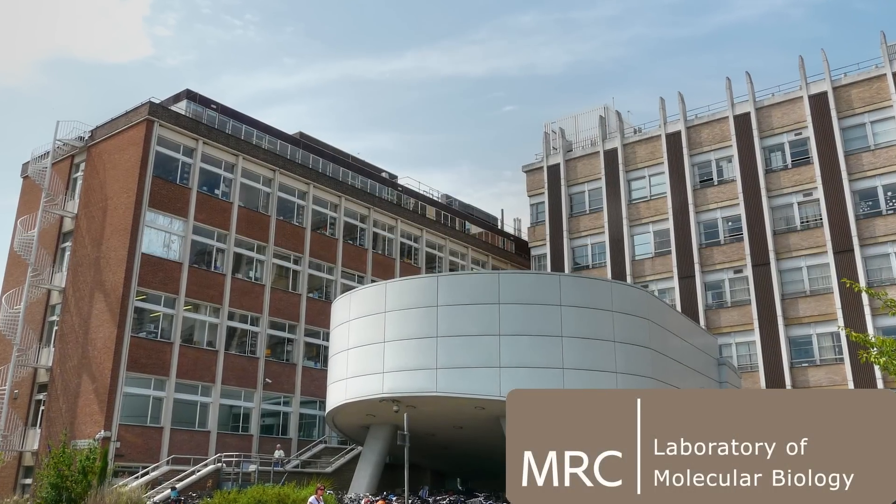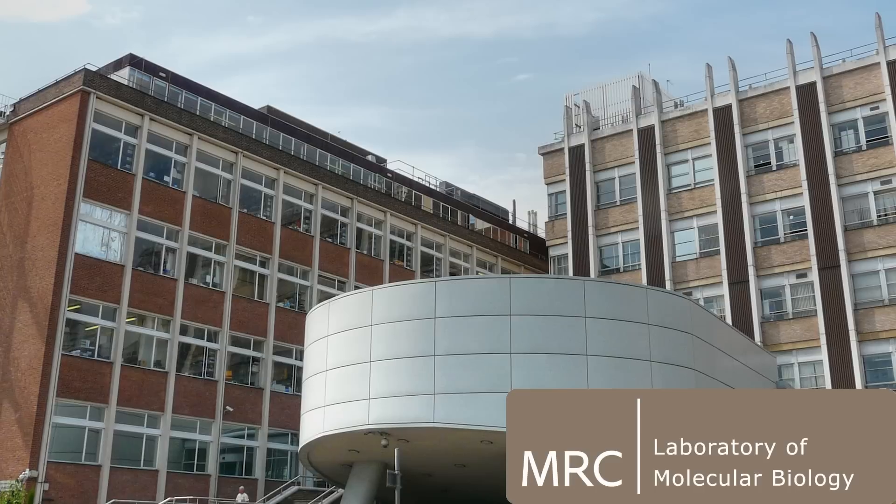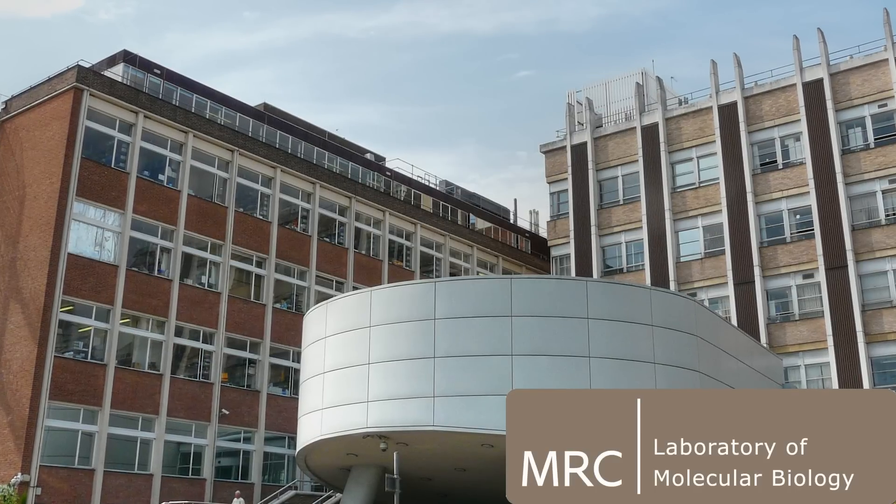In 1962, Sanger became the head of the protein chemistry division of the Laboratory of Molecular Biology at Cambridge. In this lab, he tackled the problem of sequencing RNA with some variations of his methodology used to sequence protein. This proved quite a challenge, especially since RNA is so fragile.